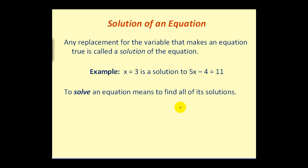Which means if I rewrite this as 5 times 3 instead of 5 times x minus 4 equals 11, if I simplify the left side 15 minus 4 equals 11, and of course 15 minus 4 is 11. So 11 equals 11 is true, therefore x equals 3 is a solution. To solve an equation means to find all of its solutions.